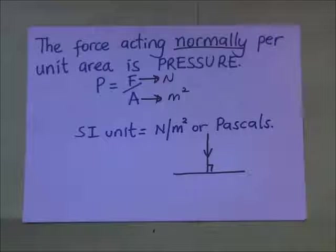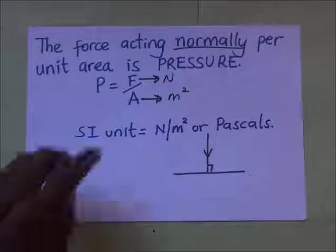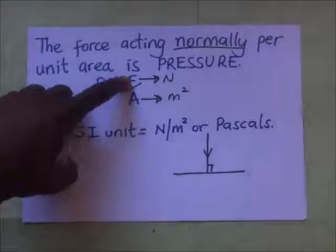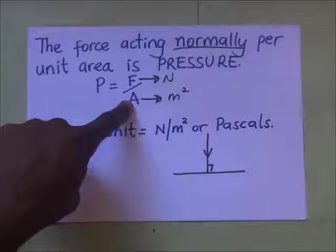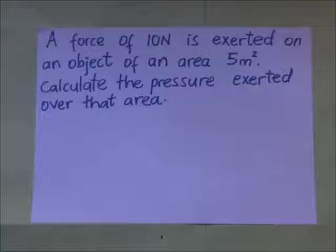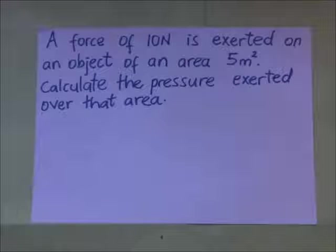We are going to look at pressure in solids. One of the things about pressure in solids is that it depends on its surface area — remember we are exerting a force over a certain area. Let's look at an example: a force of 10 Newtons is exerted on an object of area 5 meters squared. Calculate the pressure exerted over that area. We are going to do it like we've been doing in the previous question.